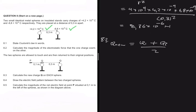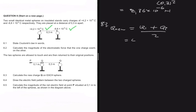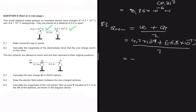So we substitute: q_new = (4.2×10⁻⁹ + (−6.8×10⁻⁹)) / 2. Putting that into the calculator gives −1.3×10⁻⁹ coulombs. That is the new charge on each of the two spheres.